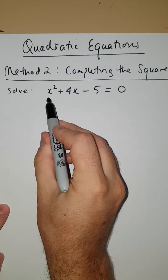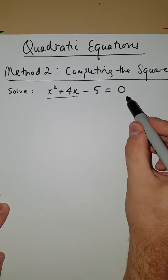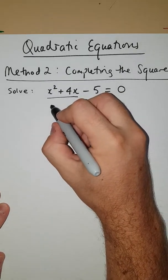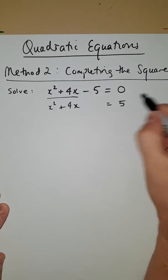So the whole idea is that this is the bit that we are going to be completing the square on. I'm going to drag this 5 over to this side. So I'm going to write this as x² + 4x = 5.